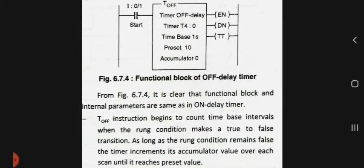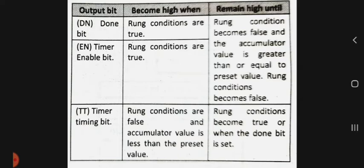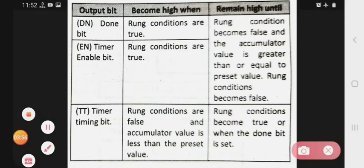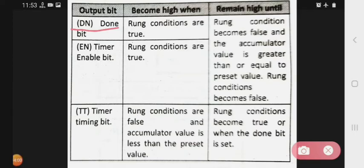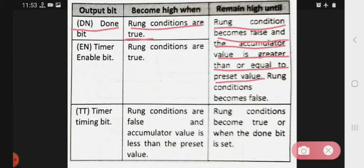Now let's see the output bits in the functional block diagram of the off delay timer. The first bit is DN, that is the done bit. In the off delay timer, the done bit becomes high when the rung condition is true, and it remains high until the rung condition becomes false and the accumulator value is greater than or equal to the preset value. When the rung condition becomes false and the accumulator value reaches the preset value, the done bit turns off.